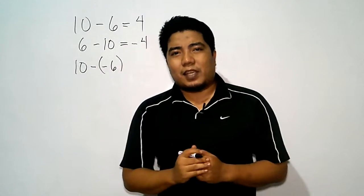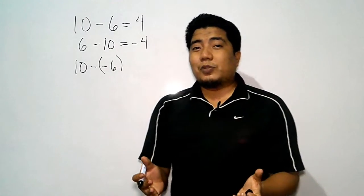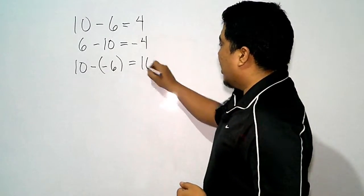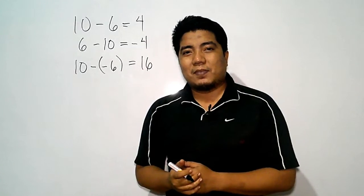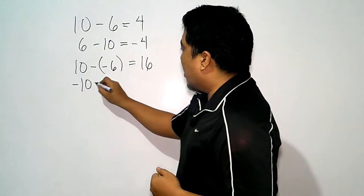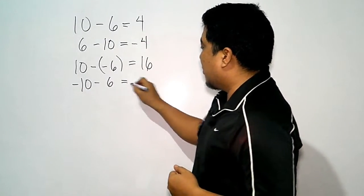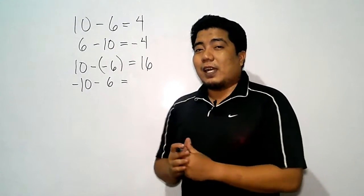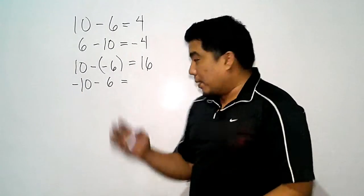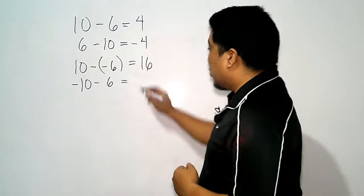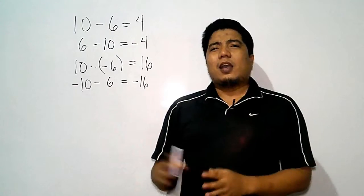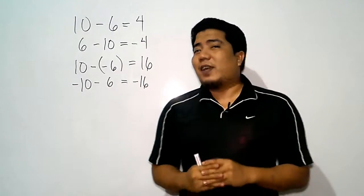Let's consider some different signs. 10 minus negative 6. For other students, they are already confused of this kind of problem. The answer for this one is positive 16. What if we have negative 10 minus 6? The problem here is that a lot of students are confused of this kind of scenario. But actually, the answer for this one is negative 16. The question is, Sir Ash, how did you get that answer very easily?